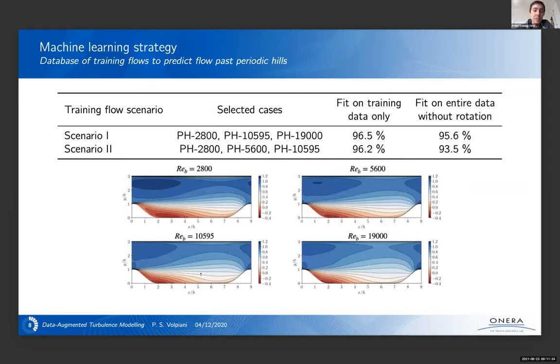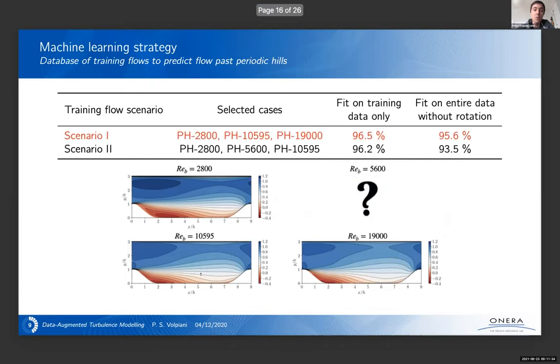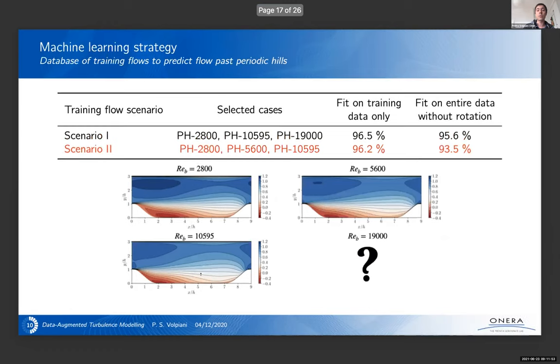So what's the idea here? We have four reference data for these four configurations. So periodic hill at four different Reynolds numbers. So the idea here is if I have only access to three DNS, am I able to predict a fourth configuration, given that I know the exact solution of three other cases. And so this would be like interpolation in Reynolds number, but we can also do an extrapolation in Reynolds number. And that's what we try to do.